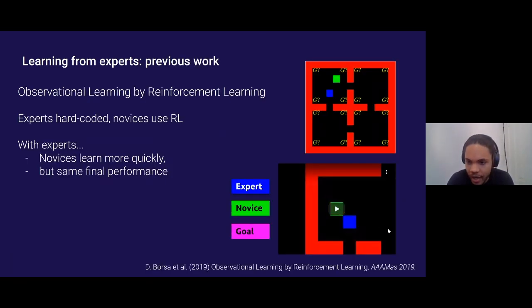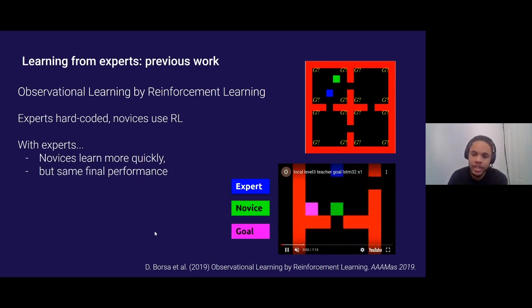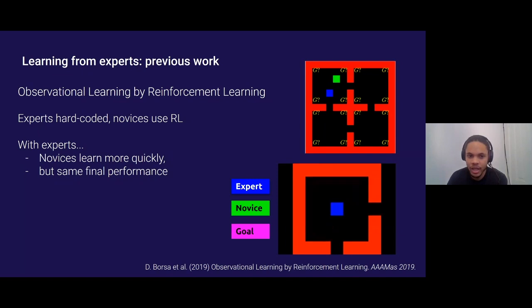There is a paper that addresses a question like this called Observational Learning by Reinforcement Learning by Diana Borsa et al. from DeepMind. In their paper the experts are hard coded and novices use RL to accomplish a task in a simple grid world. The diagram on the top shows like a bird's eye view of the map. The expert in blue optimally travels to a goal which at each episode is placed randomly at one of these 16 positions and the novice needs to learn to get to the goal as well. Here's a video of that. They found that the experts help the novices learn more quickly but even in the presence of the experts the novices don't do any better ultimately than they would if they were learning alone.